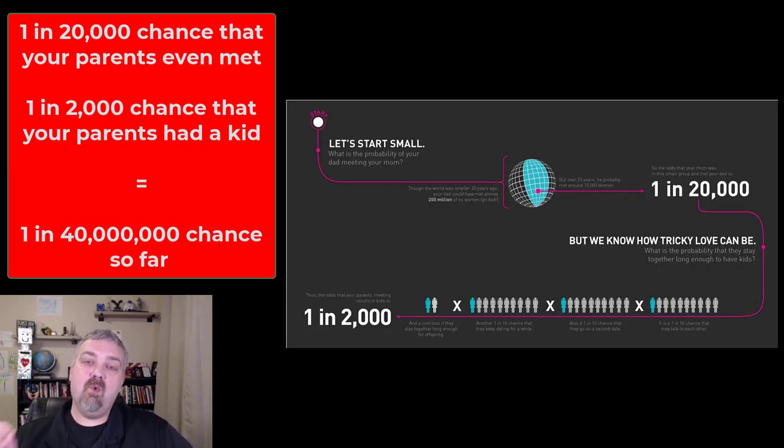So we start pretty small here. It says there's a one in 20,000 chance that any man and woman are going to actually meet each other. And then there's a one in 2,000 chance that they will get together and stay together long enough to have a child.